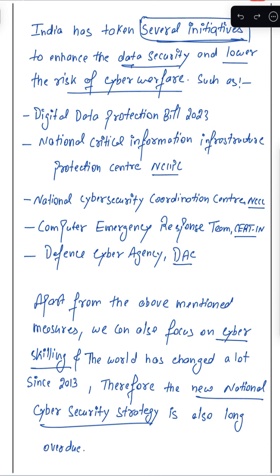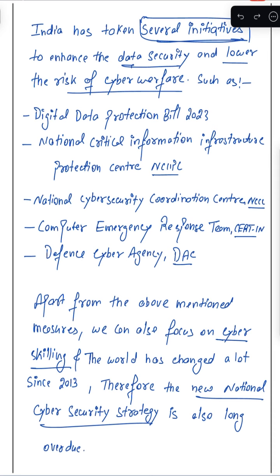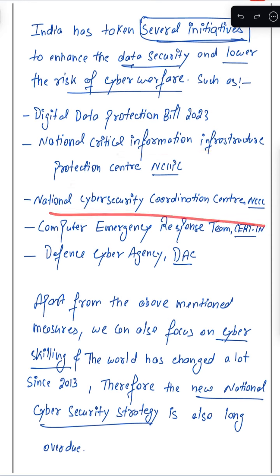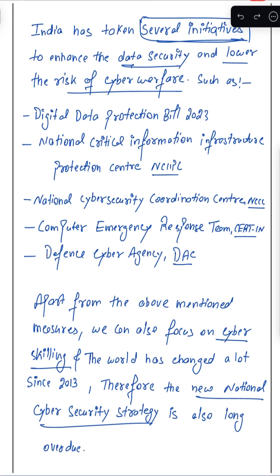You need to present it well. I built a narrative that India has taken several initiatives to enhance data security and its capability to retaliate in cyber warfare. These include: Digital Data Protection Bill 2023, National Critical Information Infrastructure Protection Center, National Cyber Security Coordination Center, and a dedicated Computer Emergency Response Team (CERT) to quickly minimize damage and retaliate against the origin of a cyber attack. India has also created a dedicated Defense Cyber Agency under the Indian Army, which demonstrates our capability.